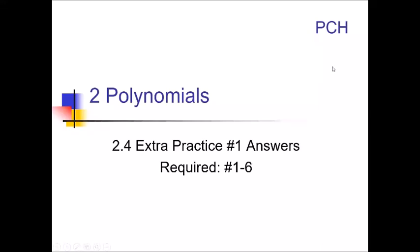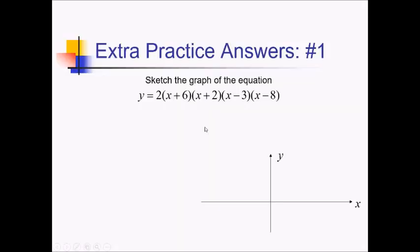Hi there, Mr. Sutton here with the PreCal Honors 2-4 Extra Practice Number 1 Solutions on Graphing Polynomials in Intercept Form. To graph this polynomial, let's start by getting the roots or x-intercepts — whatever zeros out each of these factors. So we have x equals negative 6 for the first factor, then negative 2, followed by 3 and 8.